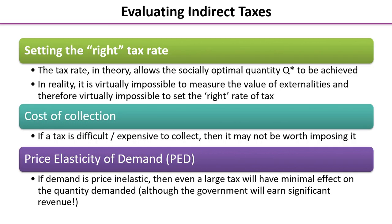Sometimes externalities occur in the future and it's very difficult to think about and quantify those future costs today. Some of them have no price because there is no market — for example, how do you put a price on the loss of a beautiful view or the impact of pollution? So it's really difficult in reality to set the right rate of tax so that a market failure is definitely and completely corrected.